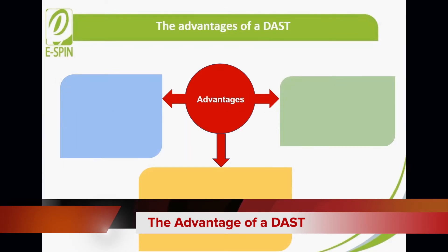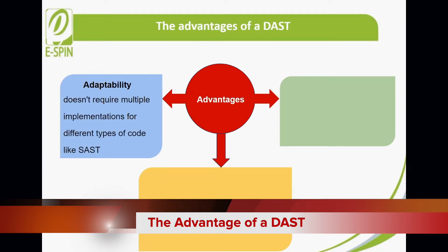Next are the advantages of DAST. First is adaptability. DAST compares favorably with SAST where adaptability is concerned. SAST suffers in this regard because it relies on being able to read a given programming language in order to function. But because DAST is language-agnostic by design, it doesn't require multiple implementations for different types of code like SAST does. Modern web apps are complex and tend to use multiple frameworks and layers of abstraction. An agnostic approach is a huge advantage in this context. Near-constant updates mean programming languages often change, but with DAST, your scanner is always prepared. One size quite simply fits all.